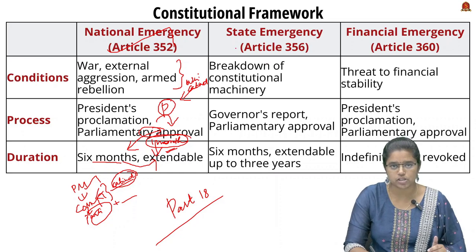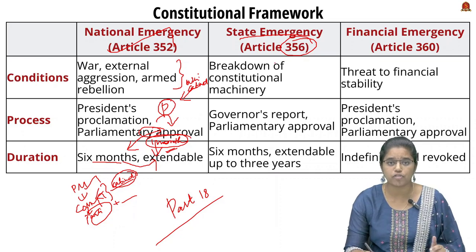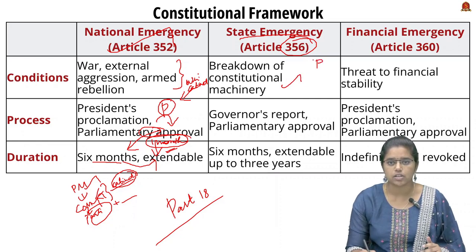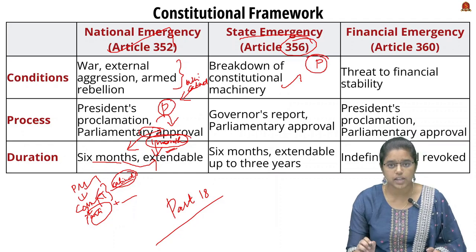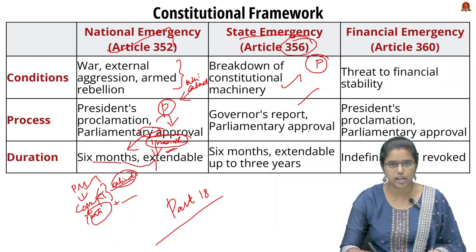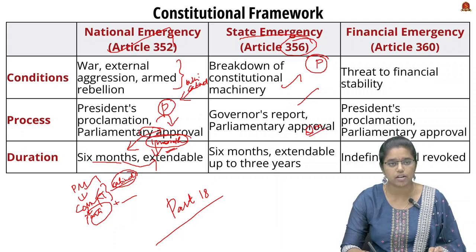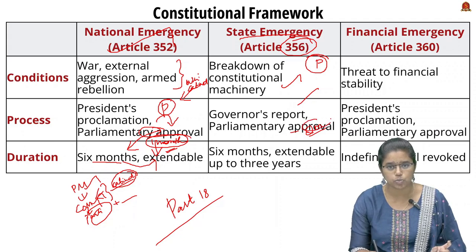The State Emergency, or President's Rule, comes under Article 356. The ground for its declaration is the breakdown of constitutional machinery. If the President is convinced that the state government is unable to conduct its governance as per the Constitution, the President can declare the State Emergency based on the Governor's report or Parliament's approval. Parliament must approve it within two months.